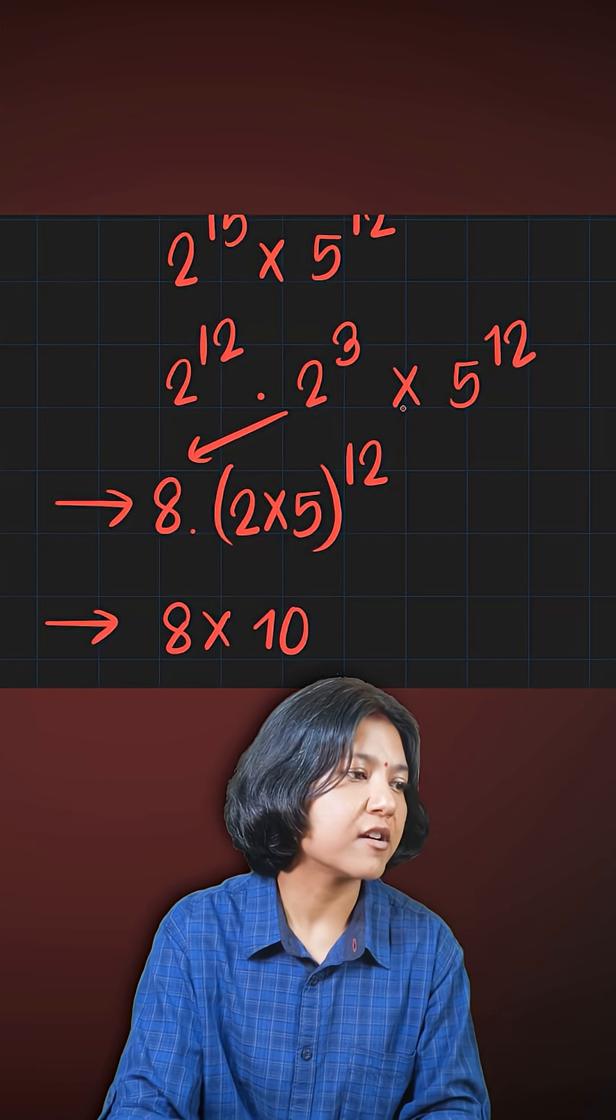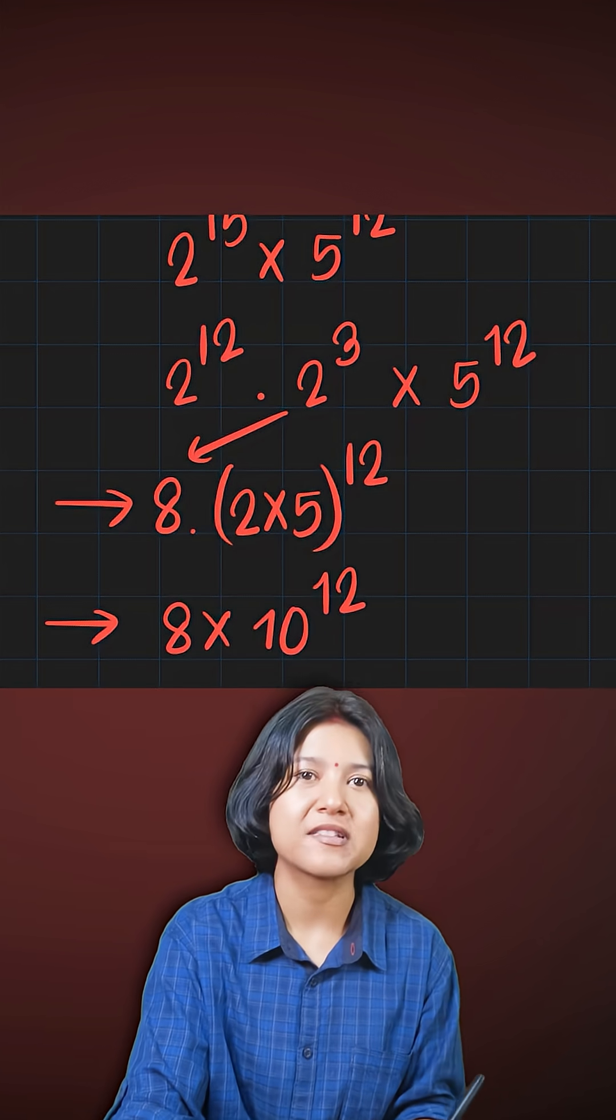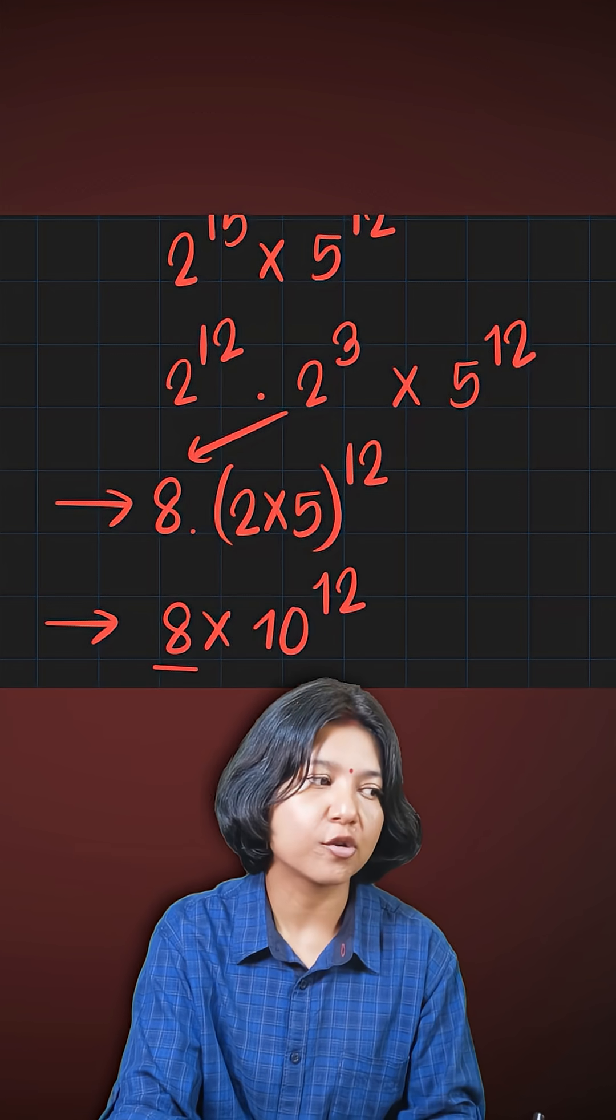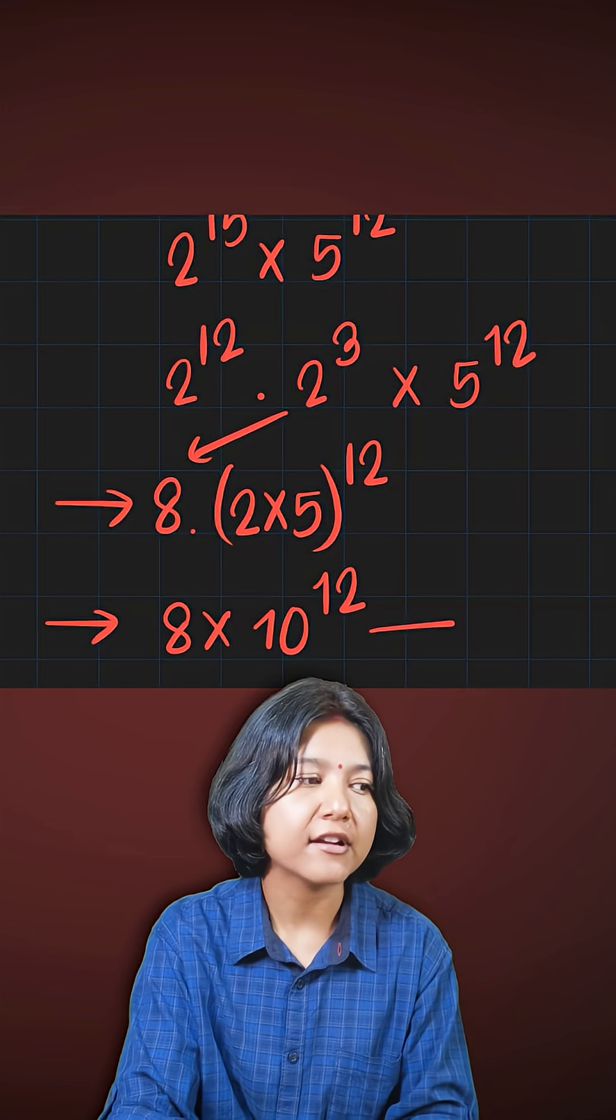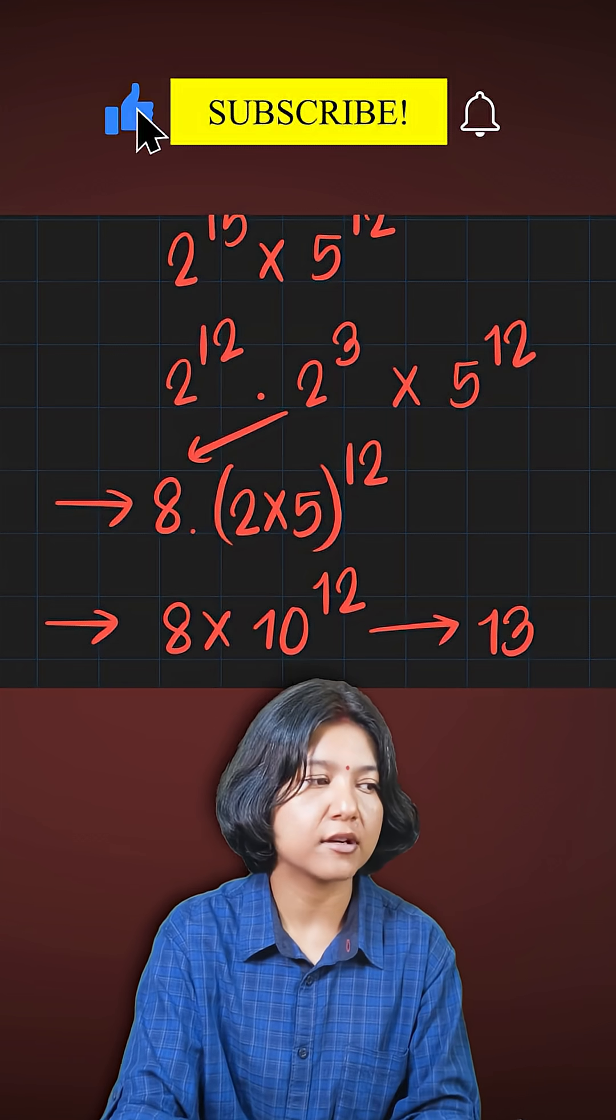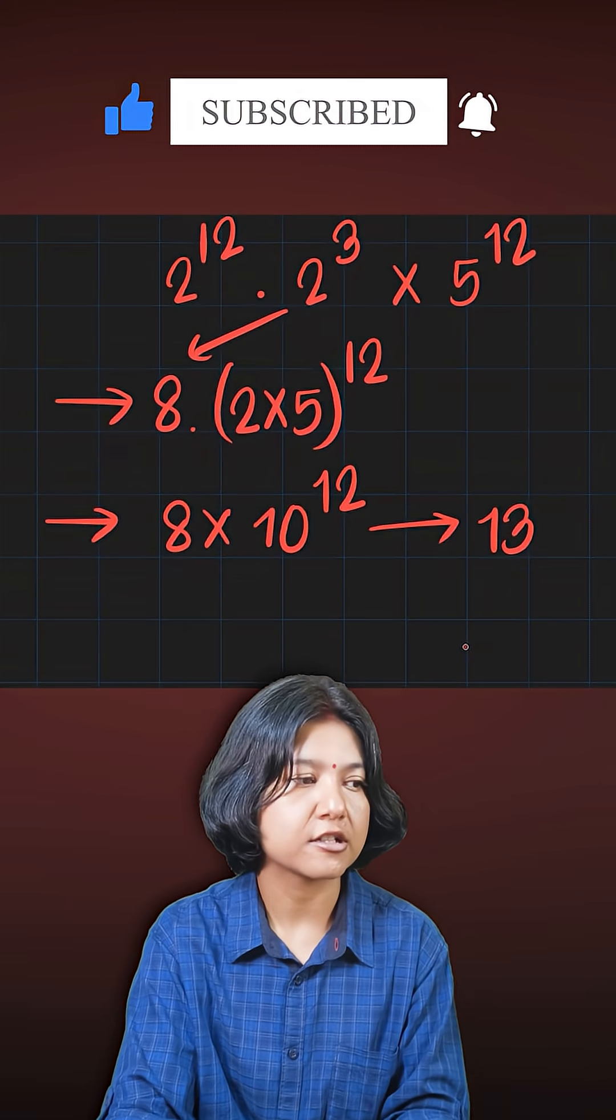2 into 5 is 10, giving me 10 to the power of 12, which means I have 12 zeros followed by this number 8. So overall, how many digits do I have? The answer is 13 digits. 12 zeros plus 1 digit, 13 digits.